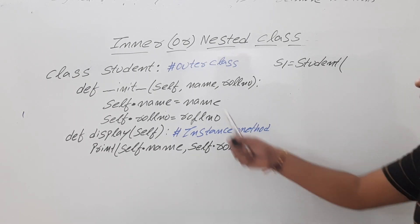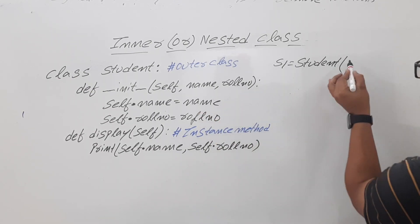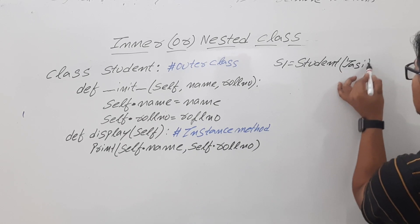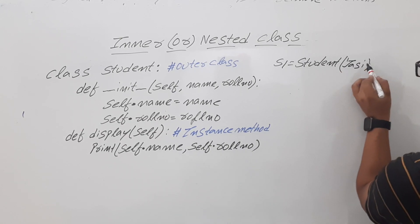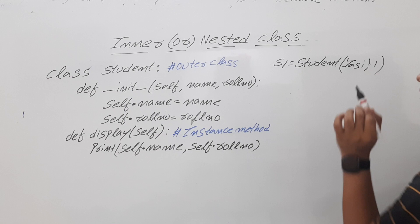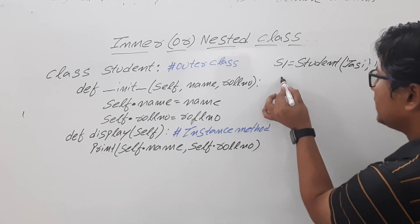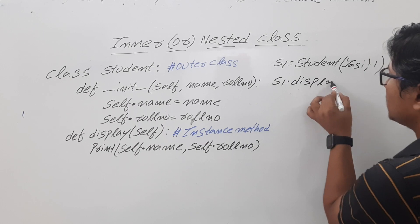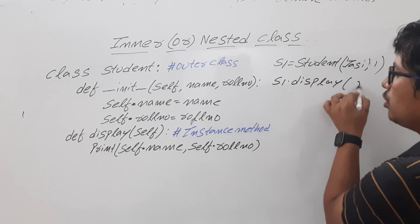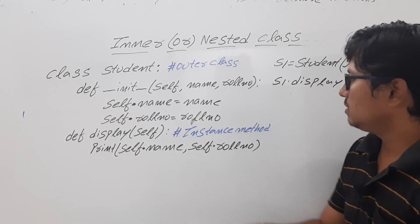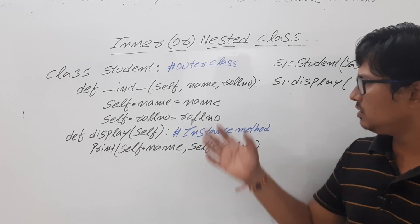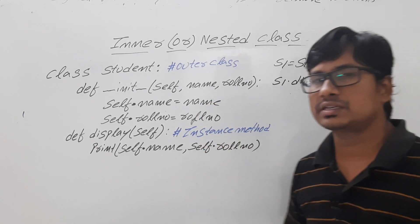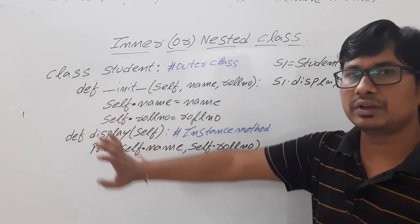We pass the name as 'JC' and the roll number as 1. Then calling s1 dot display will give the output JC and 1. These things we have already discussed. Now what I want to discuss is defining another inner class inside this outer class.